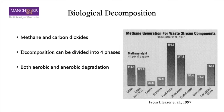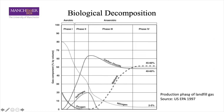Biological decomposition will produce methane and carbon dioxide in large amounts, and these can be broken down into four phases, both in aerobic and anaerobic degradation. This chart shows the different gas content changes during the whole process.